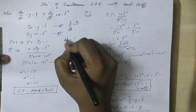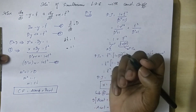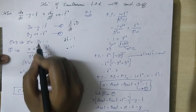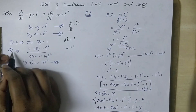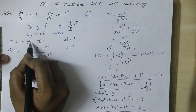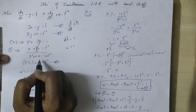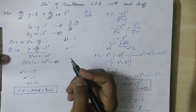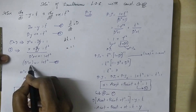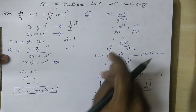So D squared x minus Dy equals 1. Then adding to eliminate y, we get D squared x plus x equal to 1 plus t squared. That gives us D squared plus 1 of x equal to 1 plus t squared — this is the third equation.